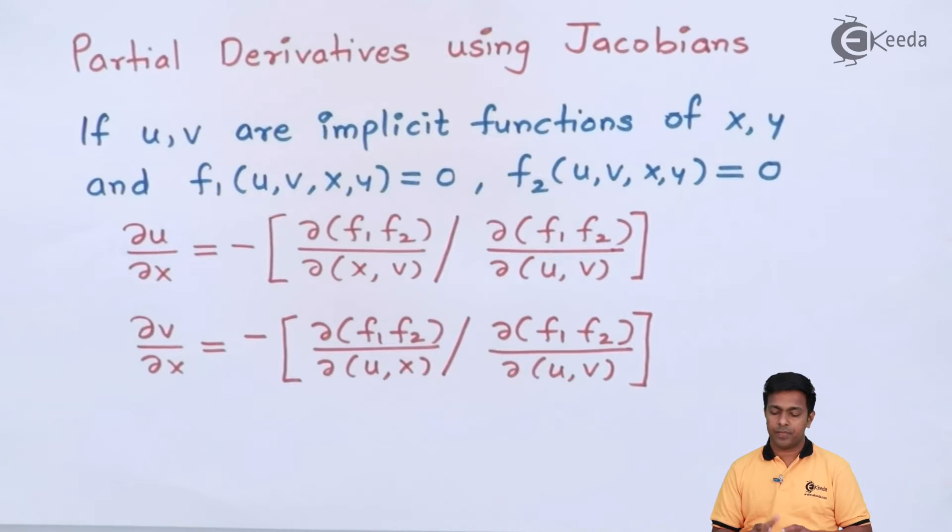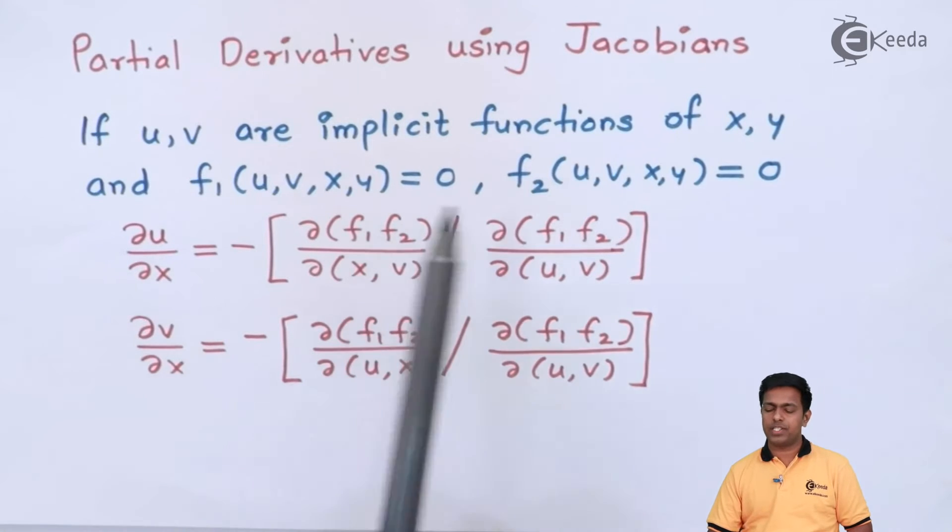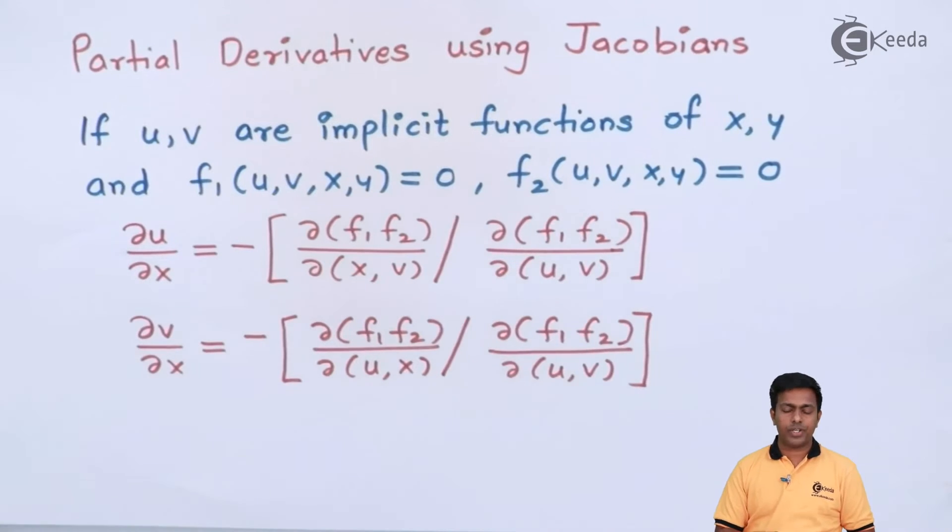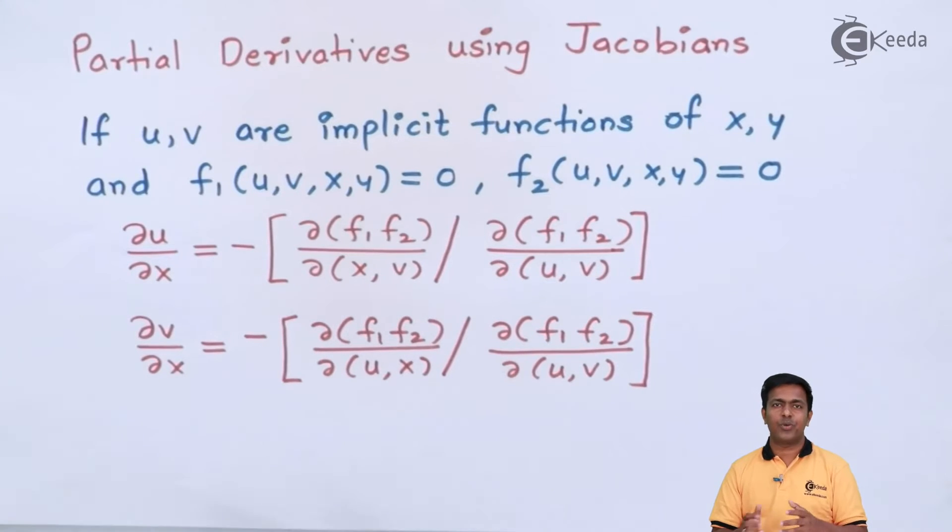It means that two implicit functions will be given and then let's say the value of ∂u/∂x and ∂v/∂x is asked. So it means we have to find out the partial derivatives and two implicit functions are given. Now the question is how to get the answer. In the partial differentiation we have seen the method to get the answer, but now here since we are in the chapter of Jacobians we'll be using the definition of Jacobian to get the partial differentiation.